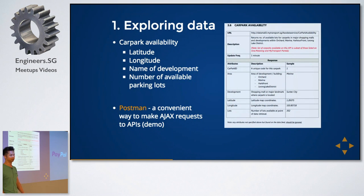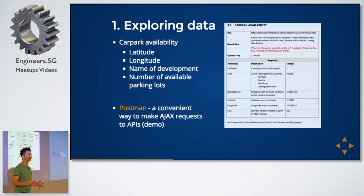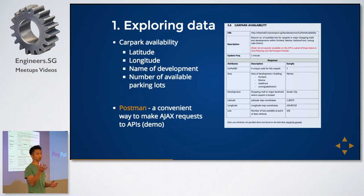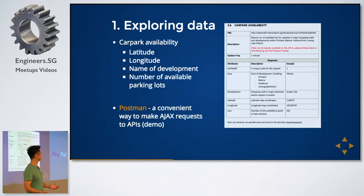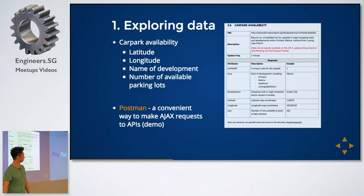I chose carpark availability because I think everybody's done cool projects on LTA DataMall before. There's a taxi heatmap that went viral, there's bus stops stuff — so I was like, nothing's left for me except carpark data. How many of you have used Postman or similar tools for making quick AJAX API requests?